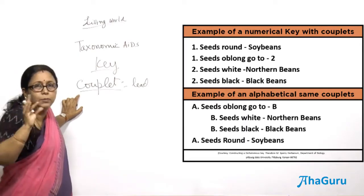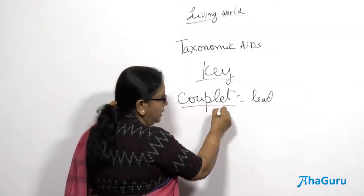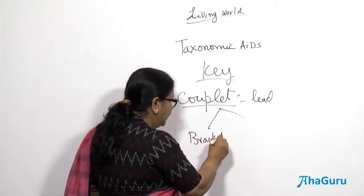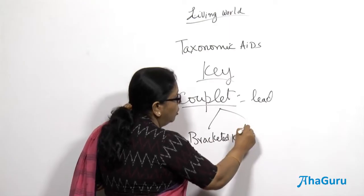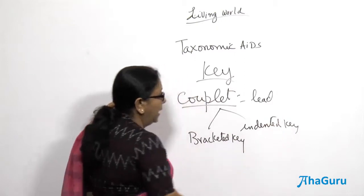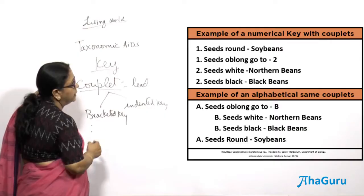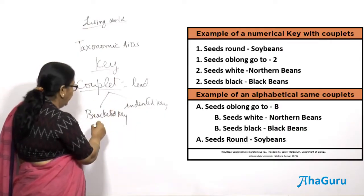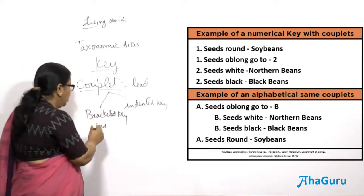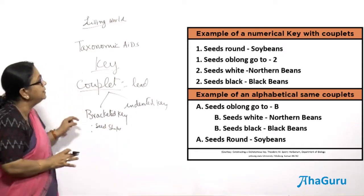The key is called a dichotomous key because it always has two sentences. There are two types of dichotomous keys. One is called a bracketed key, where the couplets are placed close together — like 'seed round' or 'seed oblong' — discussing contrasting features of the same character together. That is called a bracketed key.